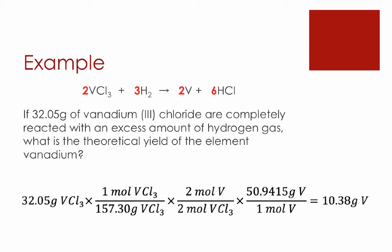So here's the solution for the balanced chemical reaction shown up above, as well as the stoichiometry down below. I'm not going to spend a huge amount of time talking about this, other than to identify the fact that the theoretical yield of this reaction will give us 10.38 grams of the element vanadium. Now, what we haven't talked about yet is how this translates into a percent yield type problem.